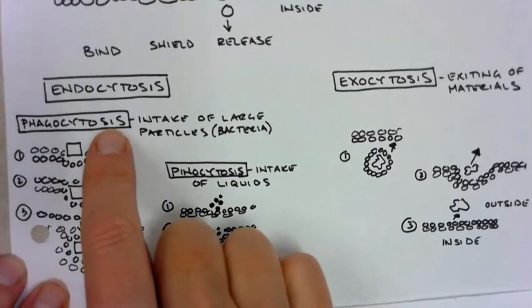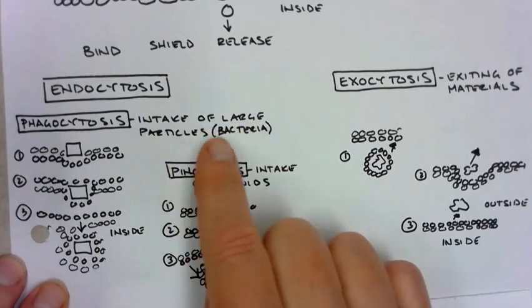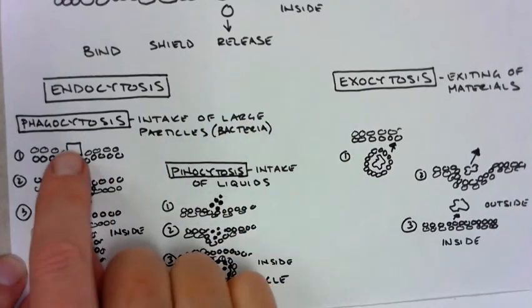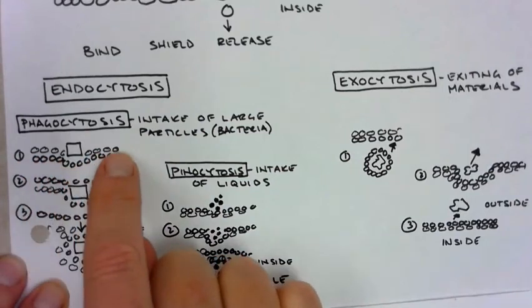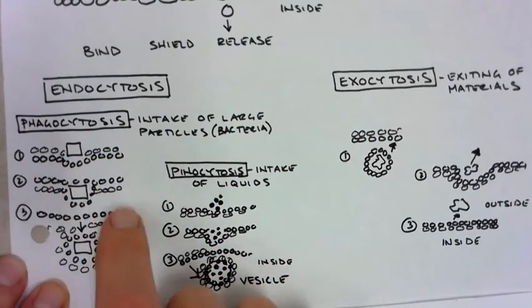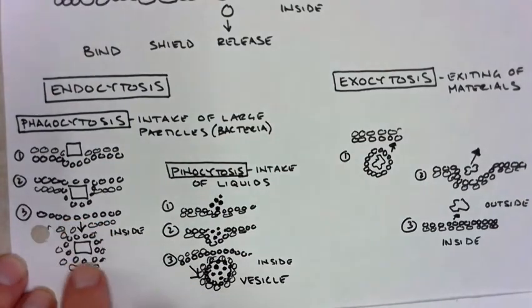One is called phagocytosis, which is the intake of large particles such as bacteria. So if this square was my bacteria, you can see that this is the phospholipid bilayer. It invaginates or dents in. It then creates a vesicle around it, and it's taken inside of the cell.